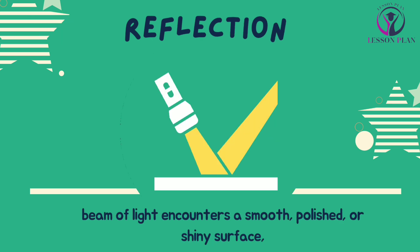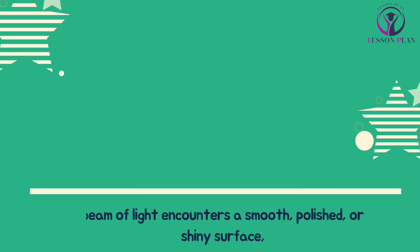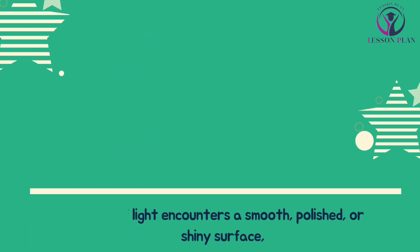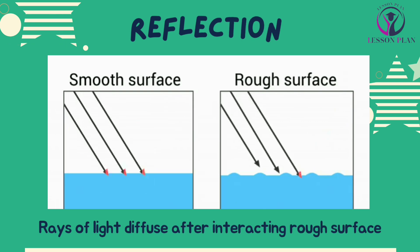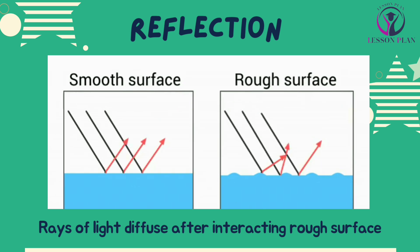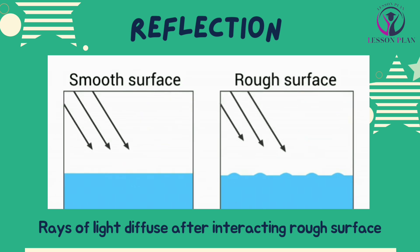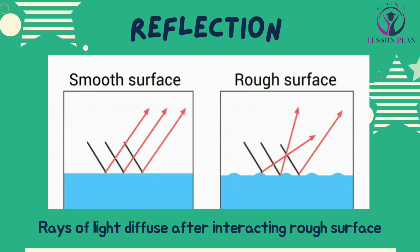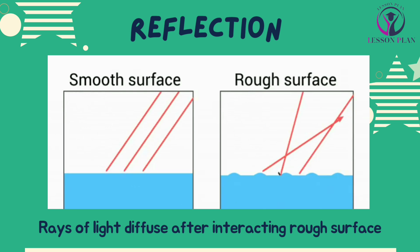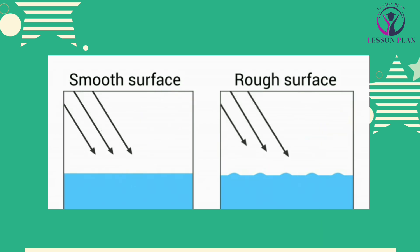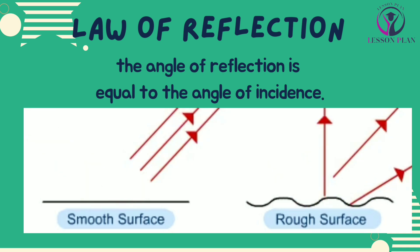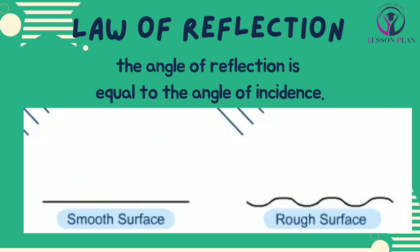Reflection of light is like a game of billiards, where light rays bounce off a surface and change direction. It happens when a beam of light encounters a smooth, polished, or shiny surface, such as a mirror or a calm body of water. Just like how a ball bounces off a wall, light reflects off a surface at an angle equal to the angle at which it approaches the surface.